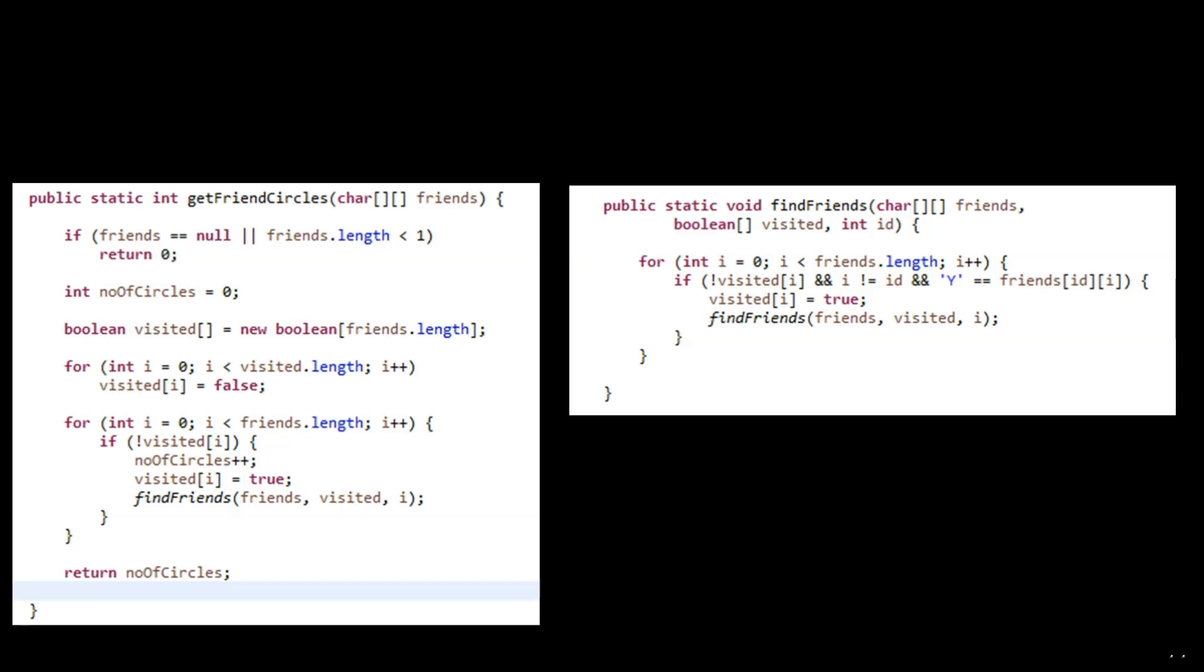Let's look at the code for this algorithm. First, initialize the number of circles to 0 and the visited array with all values false. Then traverse students that haven't been visited and find all friends of each student. The findFriends function performs depth-first traversal to determine the friend circle for a student, marking visited[i]=true when visiting student i.